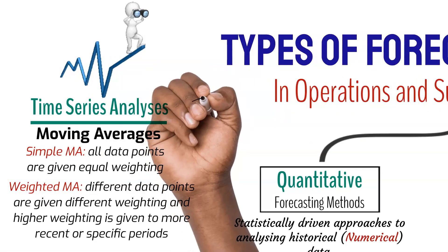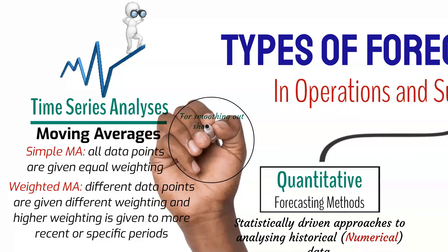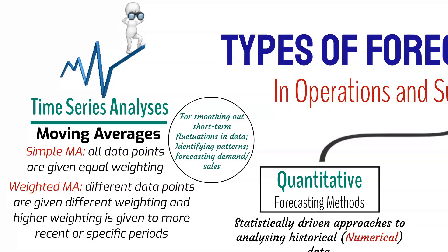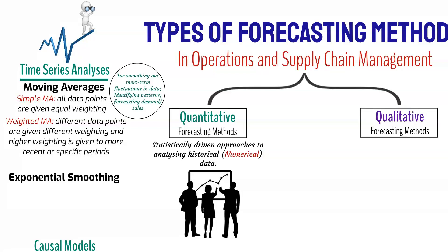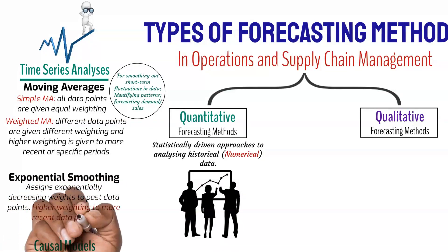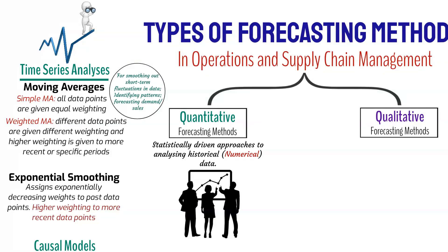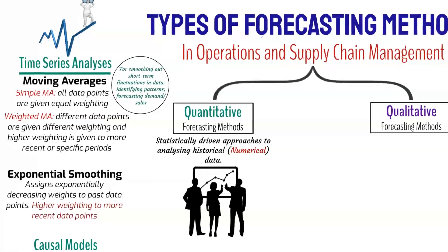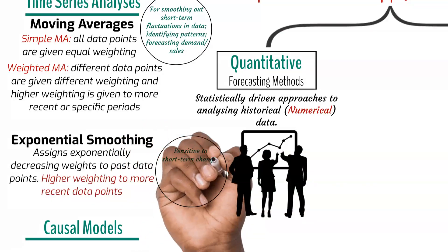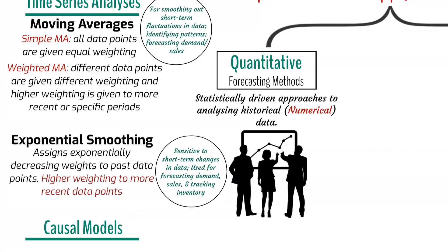Moving averages are used to identify and smooth out short-term fluctuations and variations in data, providing a clearer view of underlying trends and patterns. In operations and supply chain management, they are often used to forecast demand, sales, or inventory levels. As for exponential smoothing, this involves assigning exponentially decreasing weights to past data points, with more weight given to recent data. It calculates a weighted average of past observations, with the weights decreasing as you move further back in time. Exponential smoothing is particularly useful for capturing short-term changes and is employed for forecasting demand, sales, or inventory levels, especially when recent data holds more significance.